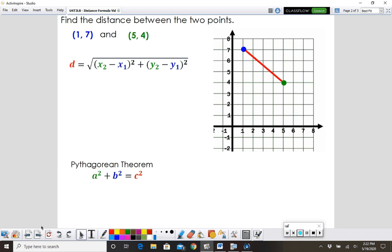Let's try a couple other problems here. We're going to find the distance between these two points: 1 comma 7, which is going to be right up here, and I'm going to label that x1, y1. And 5 comma 4 down here, that'll be my x2, y2.